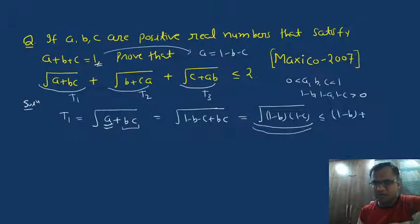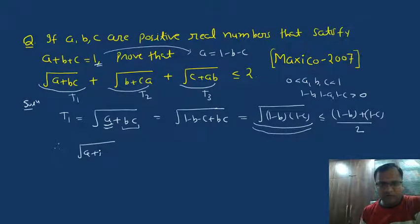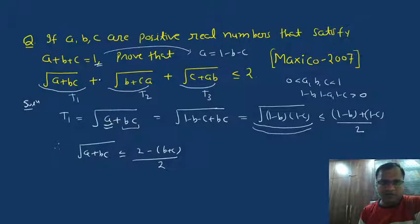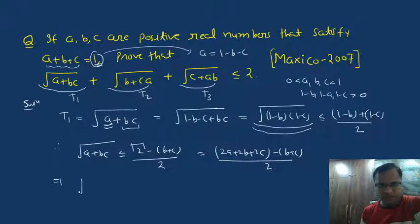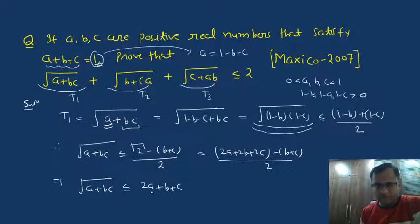Their arithmetic mean is (1 minus b plus 1 minus c) divided by 2. Therefore, root of (a plus bc) is less than or equal to (2 minus b minus c) divided by 2. The value of 1 is a plus b plus c, so the value of 2 is 2a plus 2b plus 2c. This implies root of (a plus bc) is less than or equal to (2a plus b plus c) divided by 2.